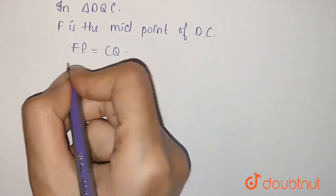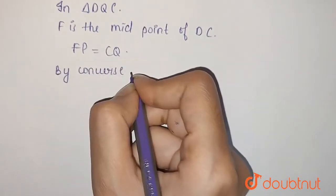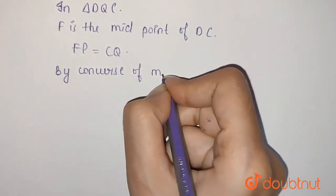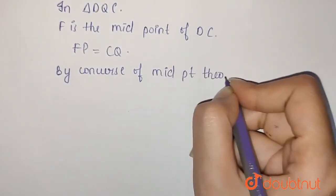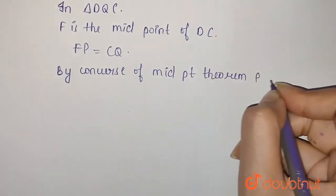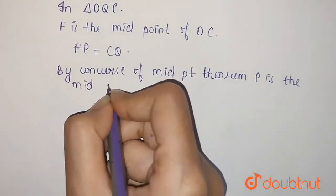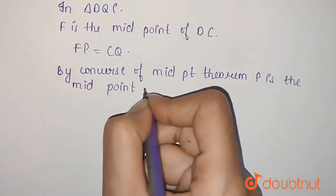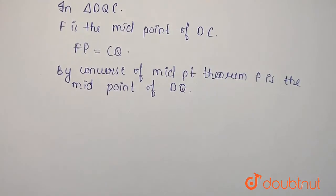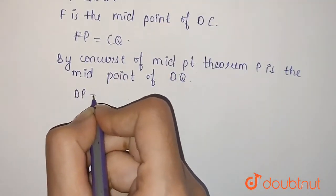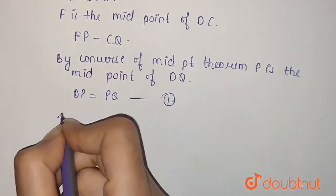Now by converse of midpoint theorem, P is the midpoint of DQ. Therefore DP will be equal to PQ, that is our equation 1.